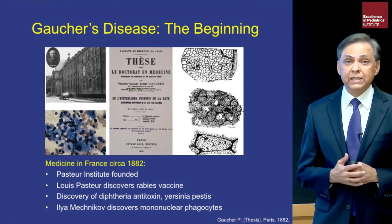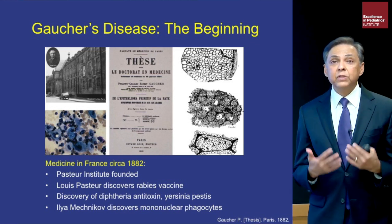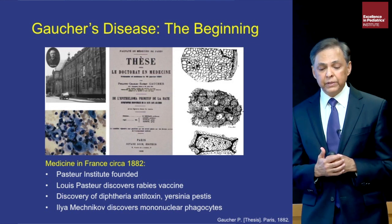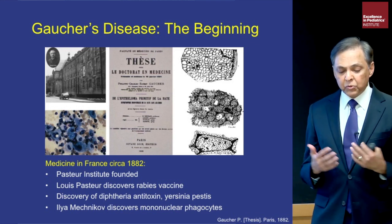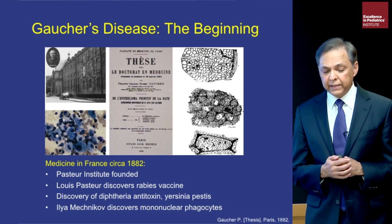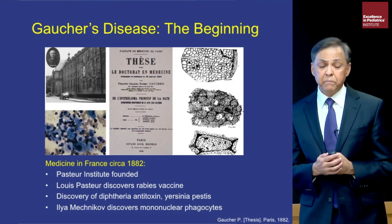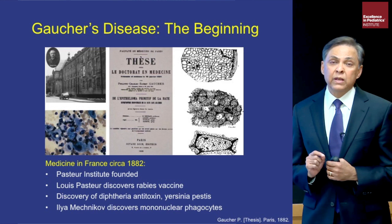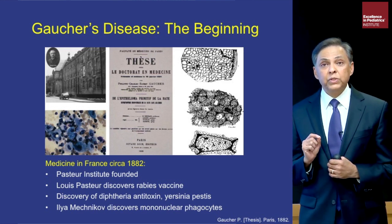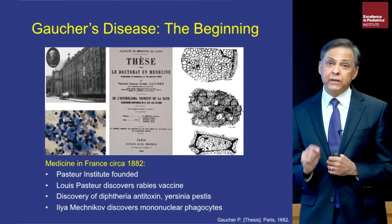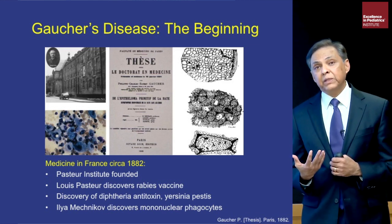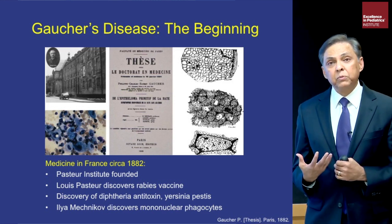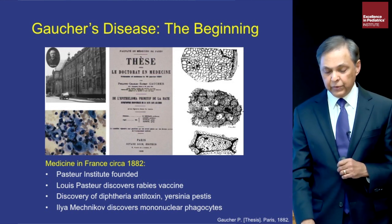1882 was a very exciting time in France — a center of medical innovation. The Pasteur Institute was founded, Louis Pasteur discovered the rabies vaccine, and there were discoveries of diphtheria antitoxin and Yersinia pestis in Paris. Importantly for Gaucher disease, Dr. Ilya Mechnikov, a Russian immigrant researching mononuclear phagocytes, was first to describe these cell types, which are very important because Gaucher cells are derived from mononuclear phagocytes.